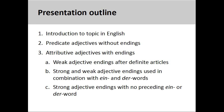We will see that predicate adjectives in German do not take an ending, but attributive adjectives may take both strong and weak endings. After examining how weak adjective endings can be used after definite articles, we will then look at how strong and weak adjective endings can be used together in combination with ein and der words. Finally, we will examine how strong adjective endings are used with no preceding ein or der words.